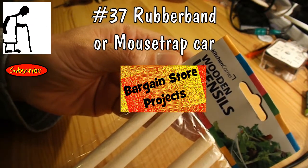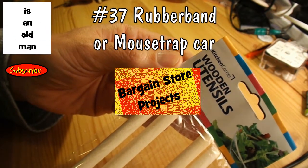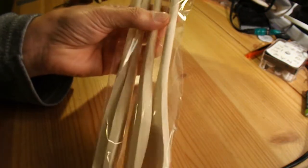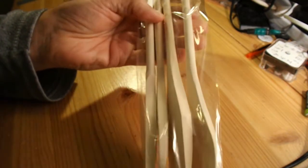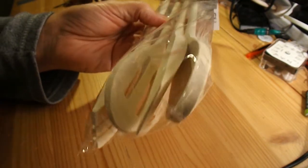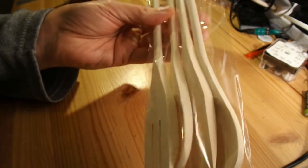We're going to use these wooden kitchen utensils for our next bargain store project. We're going to make a rubber band powered car and probably make a mousetrap powered car, one after another, using these.